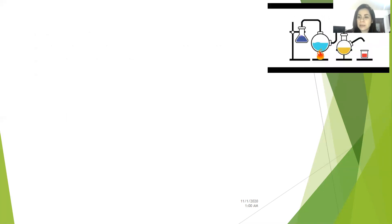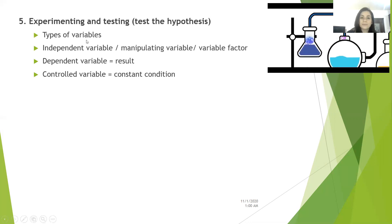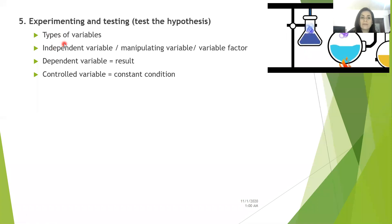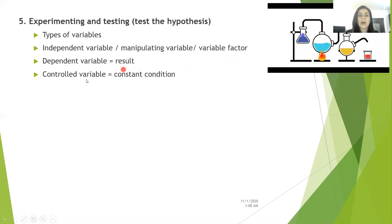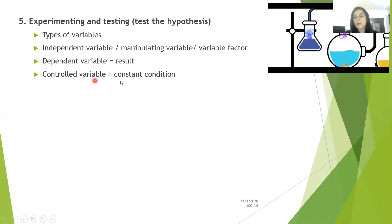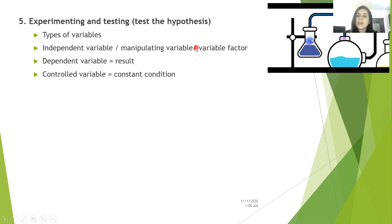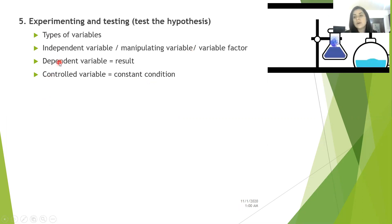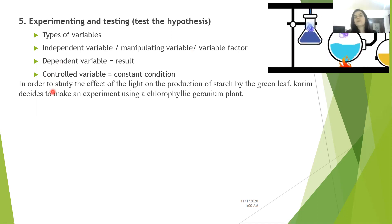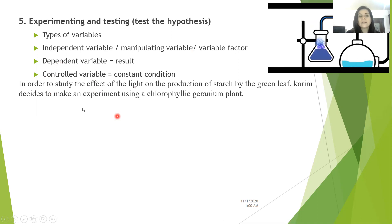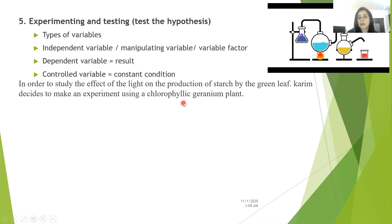In the experiment, we should have only one variable factor, which is the factor that I'm studying. So here I'm studying the effect of light on the production of starch, so light will be the variable factor. In the experiment I will also have many controlled variables or constant conditions so that they won't affect the result of the variable factor. In order to study the effect of light on the production of starch by the green leaf, Karim decides to make an experiment using a chlorophyllic geranium plant.